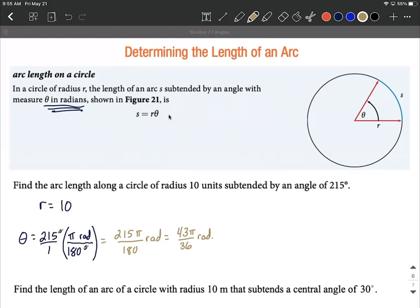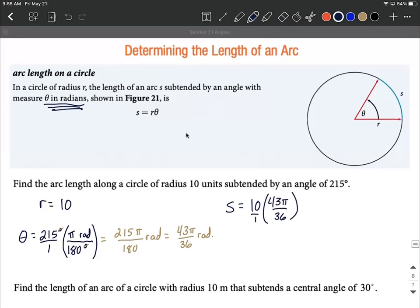The last thing we need to do is fill into this formula now that we have our angle in radians. We can calculate s = r times theta, which is 10 times 43π over 36. Multiply those numerators to get 430π over 36, which reduces down to 215π over 18. That's an exact answer for this arc length.